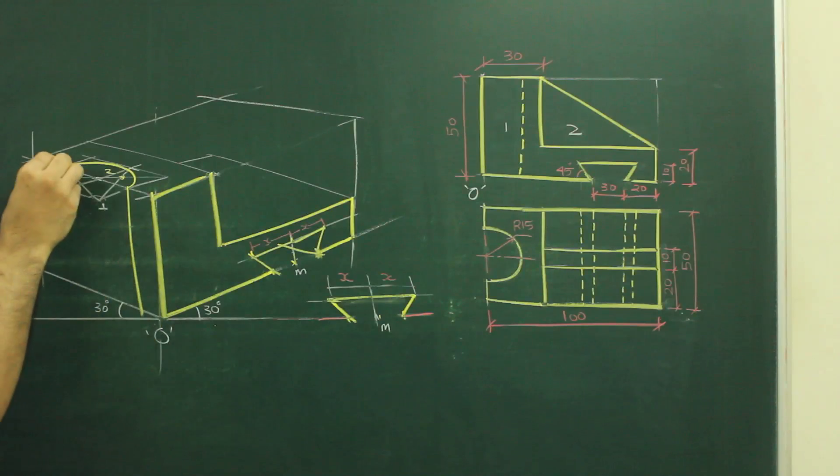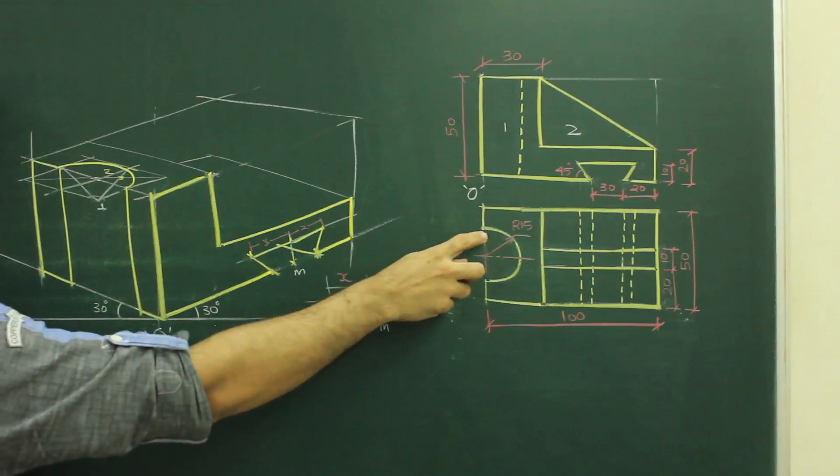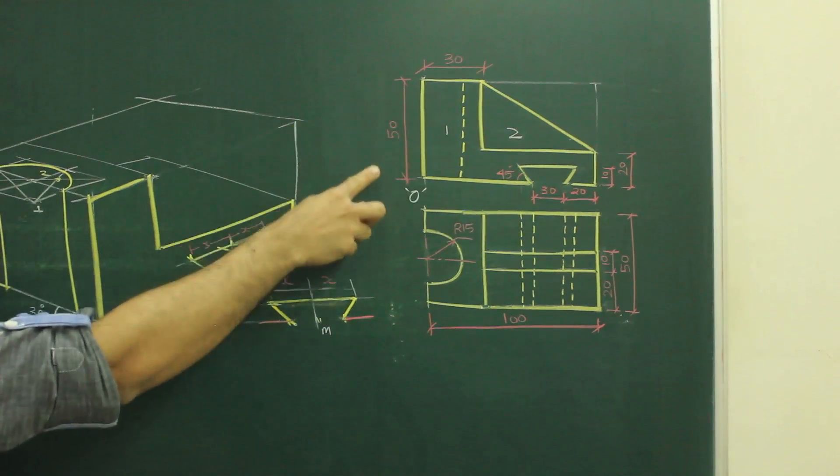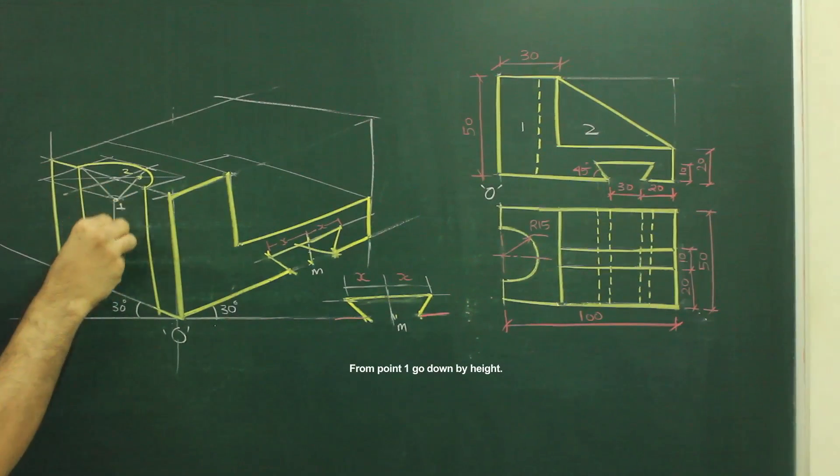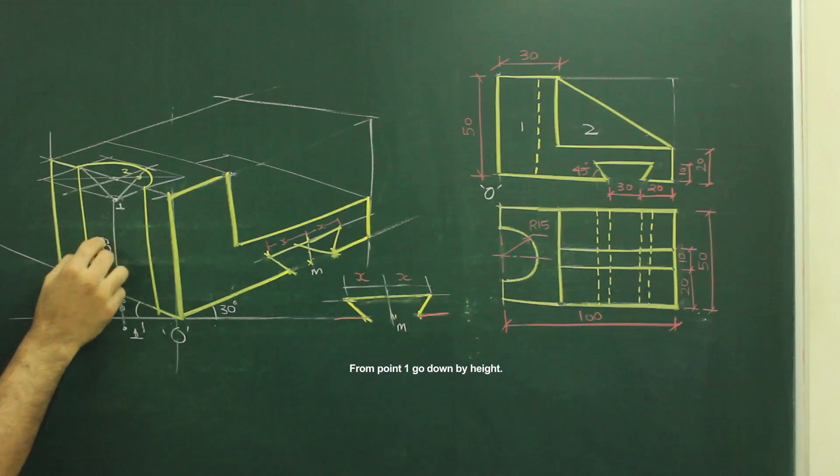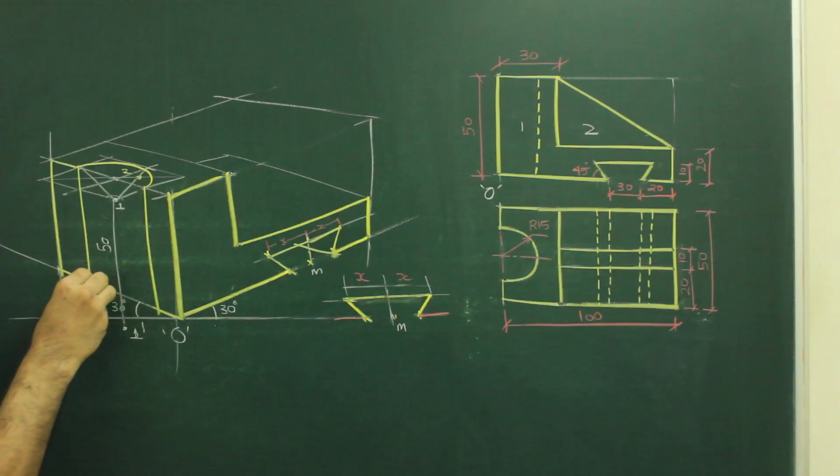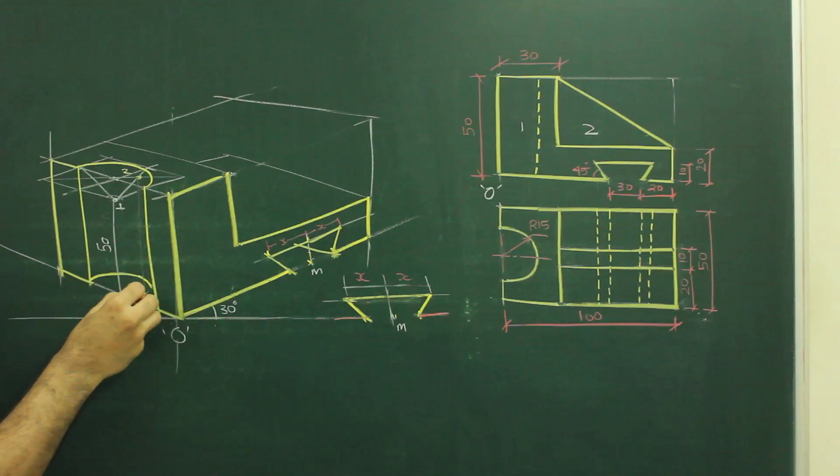After that, you plot this point down. You project this point down. Now see this. When you see top view, you will realize this circle is through and through. How much is going down? 50. So, what we need to do? From this point 1, we need to go down by 50. We will mark that point as 1 dash. How much you have to go down? 50. Why 50? Because height is 50. So, we will take this radius. Again, we will go down by 50. And we will draw this radius. See, there is a possibility that you can take this point 2 also down by 50. That is 2 dash. And you can check. So, this is our bottom circle.